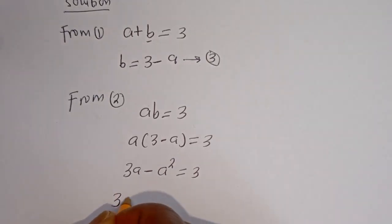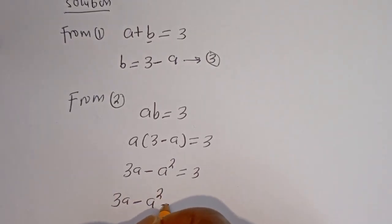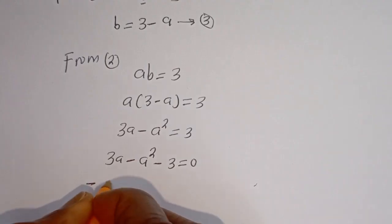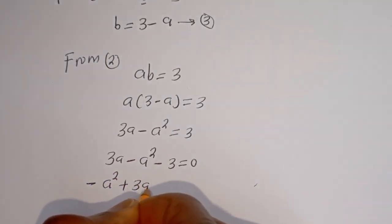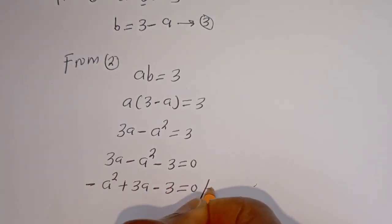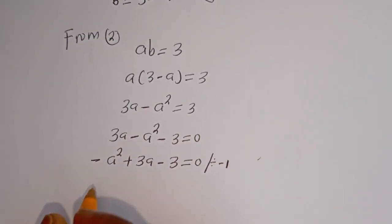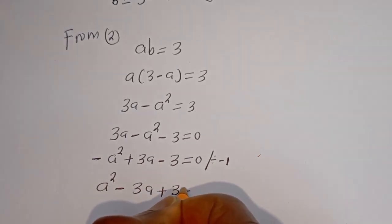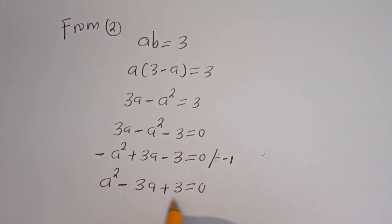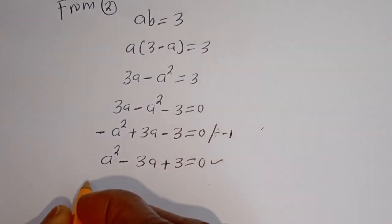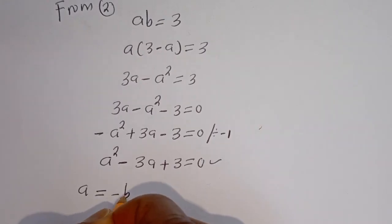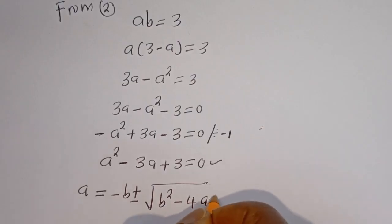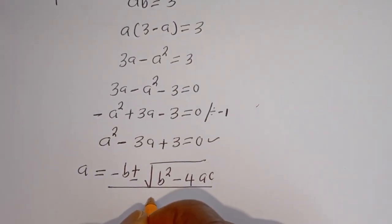Then we have 3A minus A squared minus 3 is equal to 0. Let's put this in standard form. Dividing all through by minus 1 gives A squared minus 3A plus 3 is equal to 0. Now this is a quadratic equation. Let's solve this using the quadratic general formula: A equals negative B plus or minus the square root of B squared minus 4AC, all over 2A.